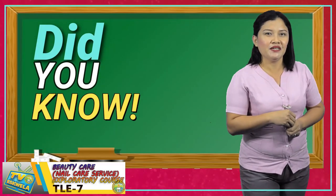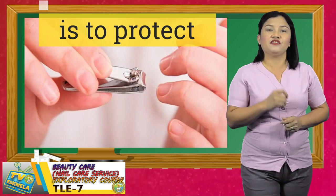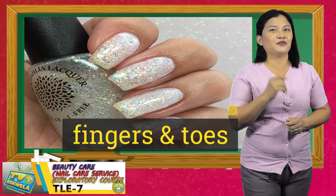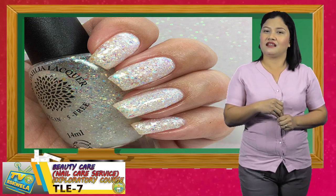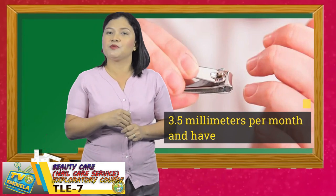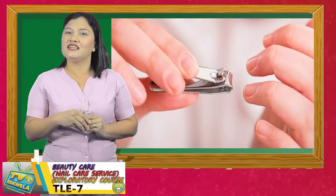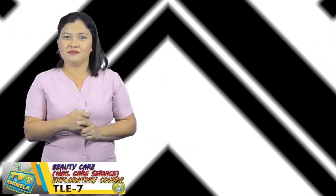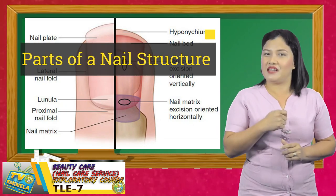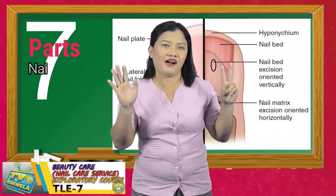Did you know that the main use of nails is to protect the fingers and toes? And it really assists in our certain physical activities in daily life. In addition, nails, specifically our fingernails, grow an average of 3.5 millimeters per month and have no feelings. Is it amazing? And to add more relevant and fascinating information about our nails, let us distinguish the parts of a nail structure. There are 7 parts of a nail structure.